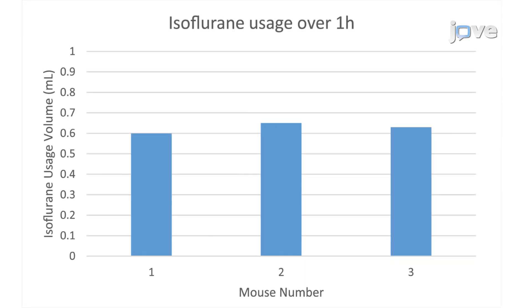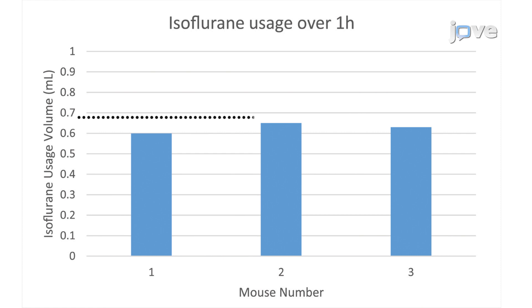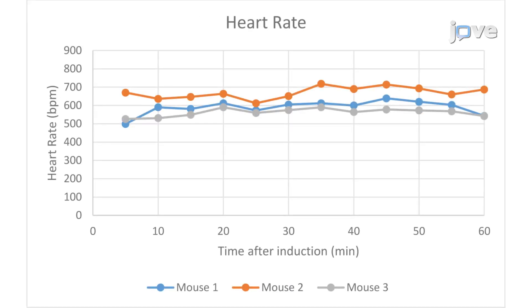This figure shows the amount of isoflurane used in milliliters for three different 6- to 7-week-old C57 Black 6 female mice over one hour of anesthesia maintenance using the digital low-flow anesthesia system. Due to the low flow rates, the low-flow syringe-driven digital vaporizer consumed less than one milliliter of isoflurane over the course of one hour. The heart rate of the three mice, measured in beats per minute using pulse oximetry at 5 to 60 minutes after induction, remained relatively stable and consistent through the maintenance period.